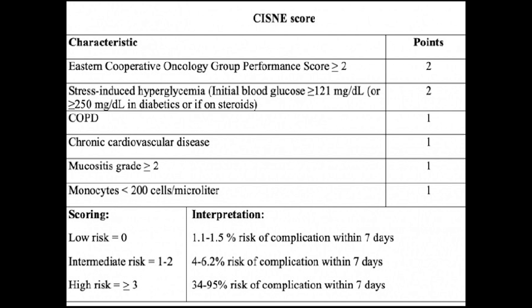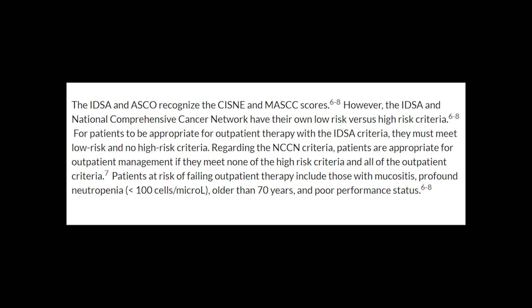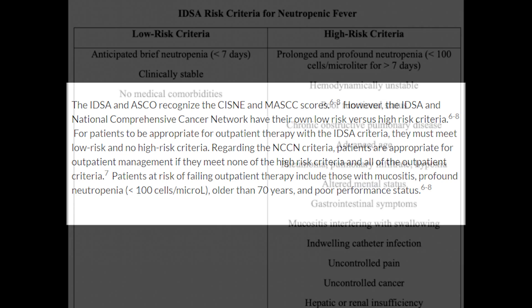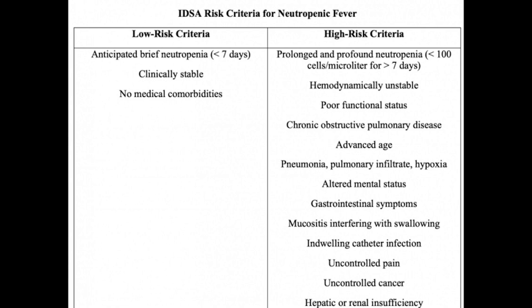With these scoring systems, even though they are not perfect, they guide clinical decision-making regarding the condition — whether patients should be admitted for inpatient care versus outpatient, whether they should get oral or IV antibiotics. Most people don't use these calculators routinely, but they're out there to help guide management and understand the burden of disease. The Clinical Index of Stable Febrile Neutropenia looks at ECOG performance, cardiovascular disease, and monocyte levels.